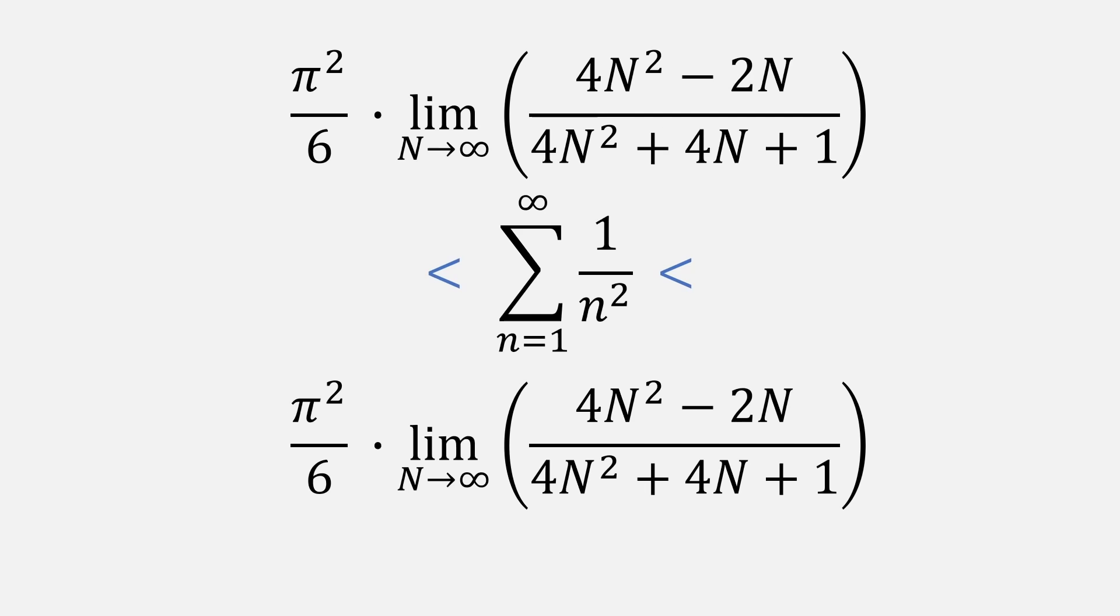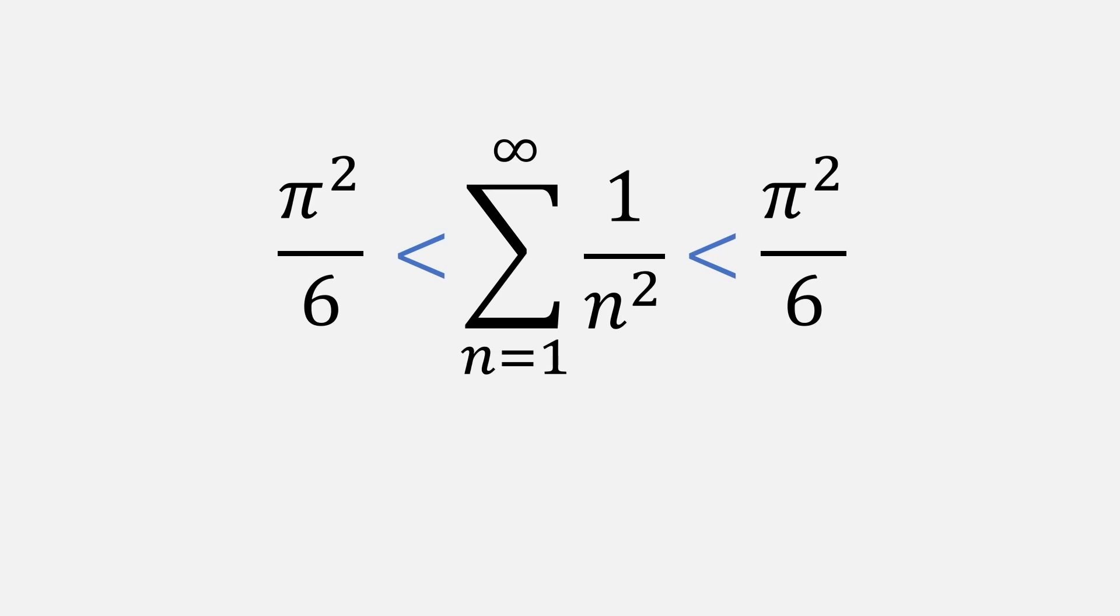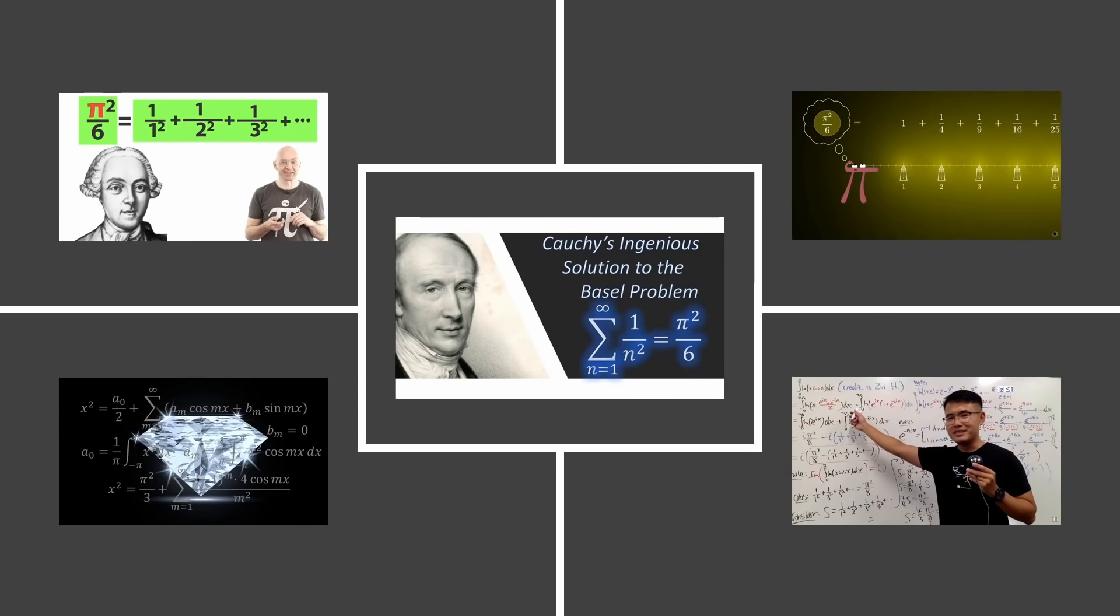Those limits go to 1 since the leading term n squared has identical coefficients in the numerator and denominator. So that leaves us with the sum squeezed between the same values of pi squared over 6 from either side. And that of course means we proved the Basel problem. Let's add Cauchy to our list of solutions.